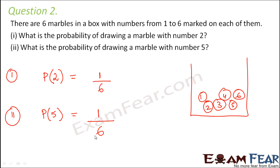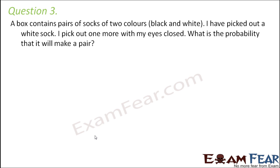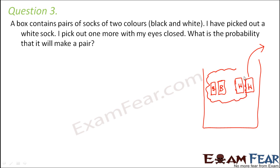Question number three: A box contains pairs of socks of two colors, black and white. So let us say this is a box and inside the box you have two pairs of socks. One pair is black and the other pair is white. I have picked out a white sock. Let's say you have already picked out this white sock. I pick out one more with my eyes closed.